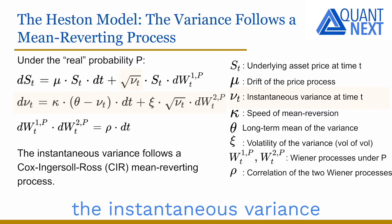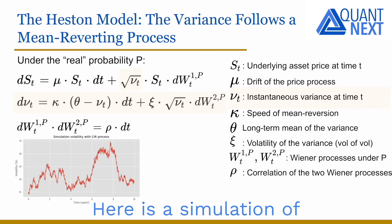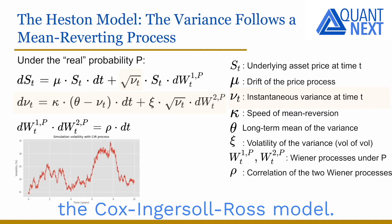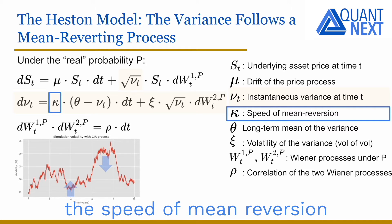In the Heston model, the instantaneous variance follows a Cox-Ingersoll-Ross mean-reverting process. Here is a simulation of a volatility path with the Cox-Ingersoll-Ross model. The kappa parameter controls the speed of mean reversion of the process.